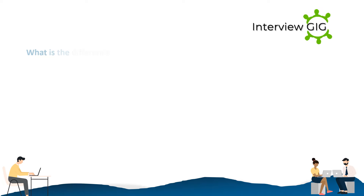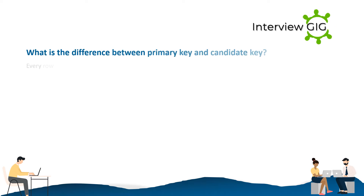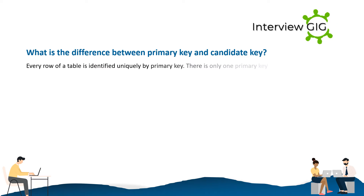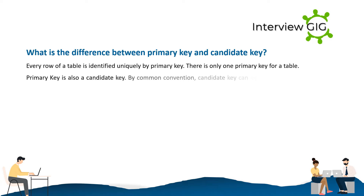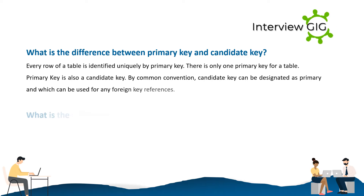What is the difference between primary key and candidate key? Every row of a table is identified uniquely by the primary key. There is only one primary key for a table. Primary key is also a candidate key. By common convention, a candidate key can be designated as primary and can be used for any foreign key references.